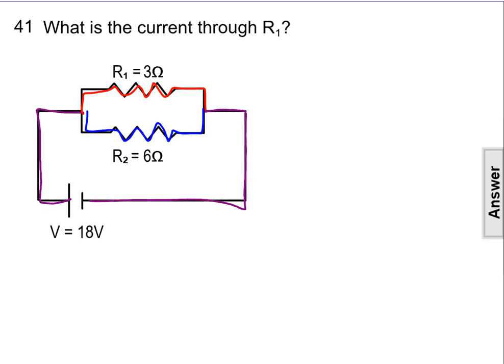So in order to find the current through resistor 1, we need to take into account the resistance at resistor 1, which is 3 ohms, and the voltage at resistor 1, which is 18 volts.